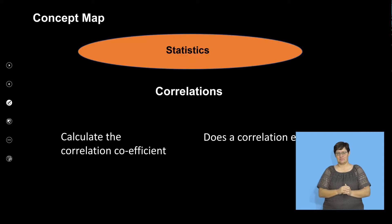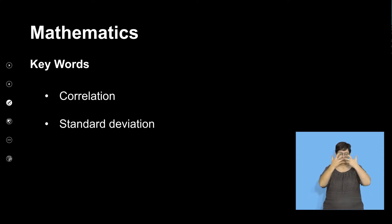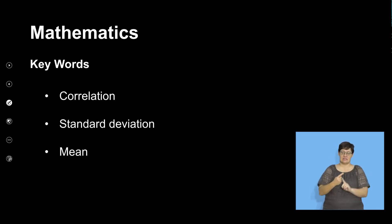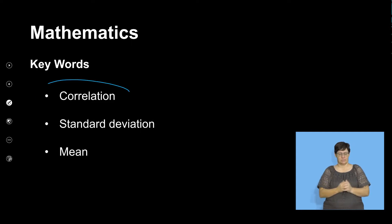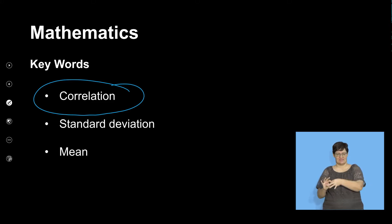Some of the key words are correlation, standard deviation, and mean. What is correlation? We spoke about correlation — correlation is the association between two variables.